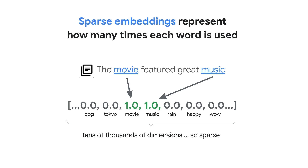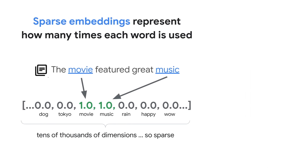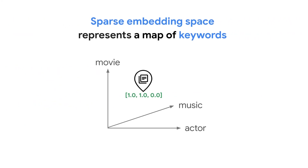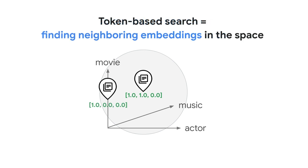But only a few of these dimensions will have non-zero values — this is why they are called sparse. Most of the values are zero. The sparse embedding space acts like a map of keywords, similar to an index in a library. In this sparse embedding space, similar embeddings can be found by examining the neighborhood of a query embedding. These neighboring embeddings share a similar distribution of keywords within their corresponding texts. This mechanism underlies token-based search using sparse embeddings.